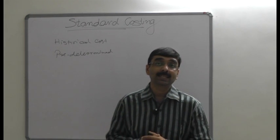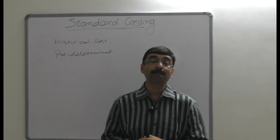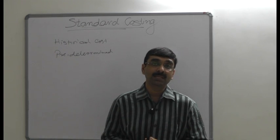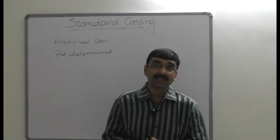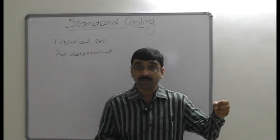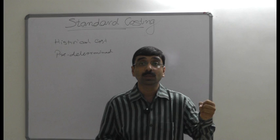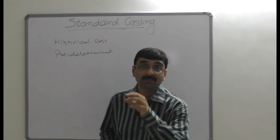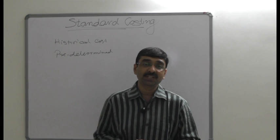In short, standard costing is a control device and not a separate method of product costing. The word standard means norm and criterion. The standard cost is thus a criterion cost used as a yardstick to measure efficiency with which actual cost has been incurred — it is a technique and tool to evaluate the position of actual cost incurred in the business.